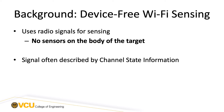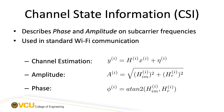Such sensing systems typically use channel state information. So what is channel state information? At the most basic level, CSI describes the phase and amplitude of the received signal across a number of channels or sub-carrier frequencies.